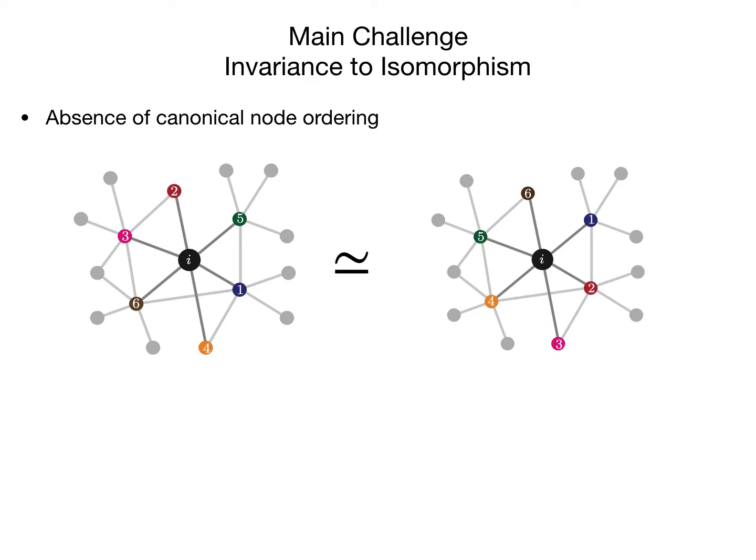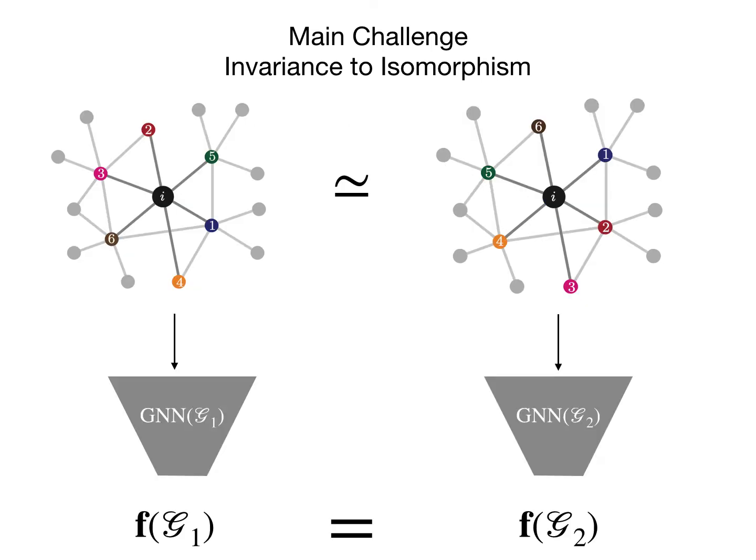The main challenge when dealing with graph structured data is the notion of graph isomorphism. In particular, contrary to Euclidean data such as images or text, we can represent the same graph in multiple equivalent ways by changing the way that we order the nodes. Thus, graph neural networks should be by construction invariant to the way that we order the nodes, meaning they are invariant to graph isomorphism.